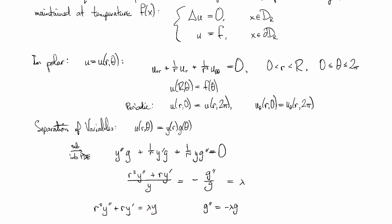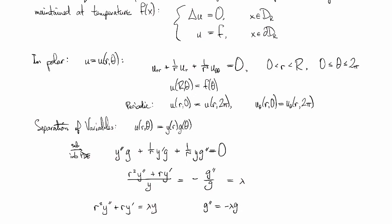If we substitute our separation of variables guess into the periodic boundary conditions, we get y(r)g(0) equals y(r)g(2π). This is from u(r,0) equals u(r,2π).